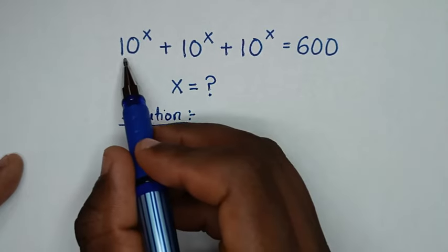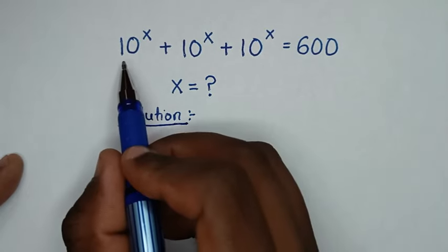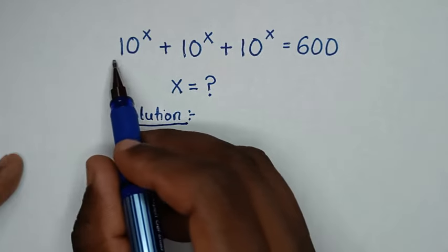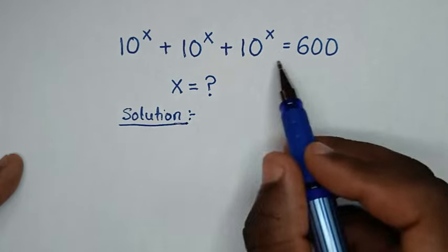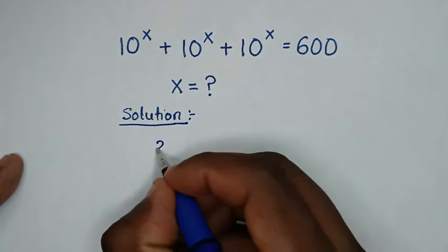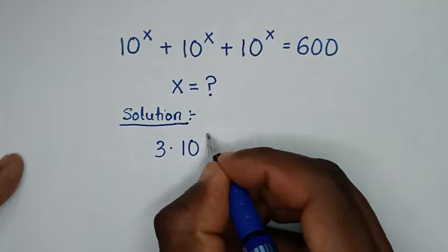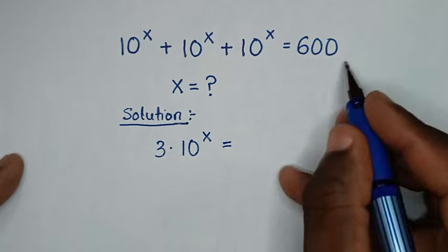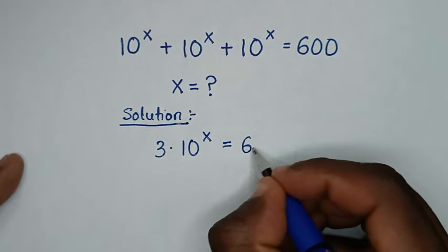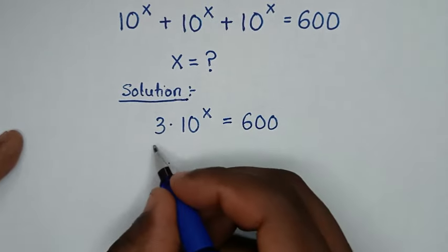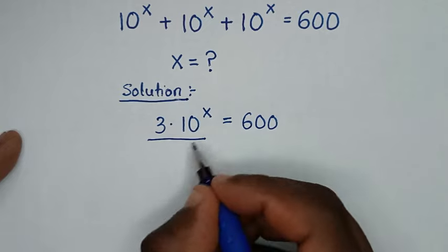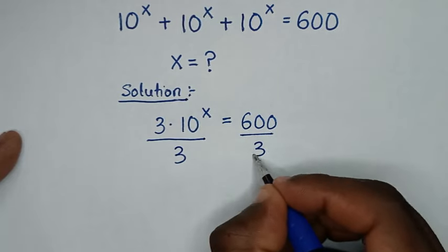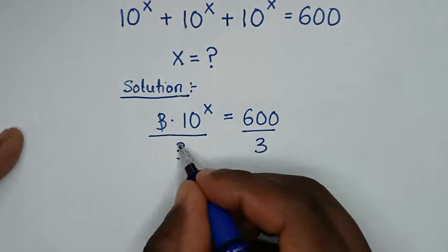From here, 10 power x appears 1, 2, 3 times, so this is the same as 3 times 10 power x is equal to 600. Then we'll divide by 3 on both sides.